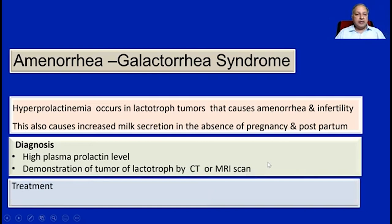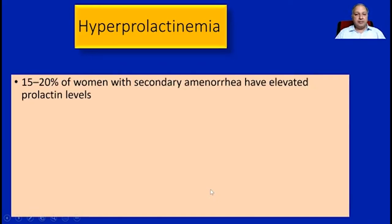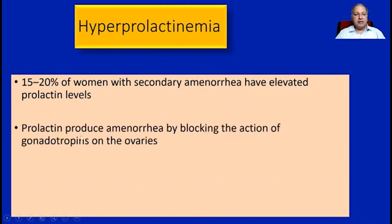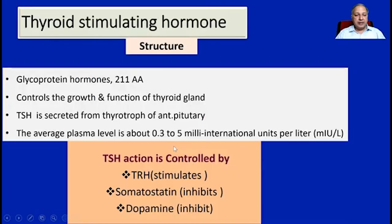The treatment involves dopamine analogue drugs, which cause inhibition of prolactin hormone release. Regarding hyperprolactinemia, 15 to 20 percent of women with secondary amenorrhea have elevated prolactin levels. Prolactin produces amenorrhea by blocking the action of gonadotropins on the ovaries. When prolactin levels are very high in males, it can also be associated with impotence.